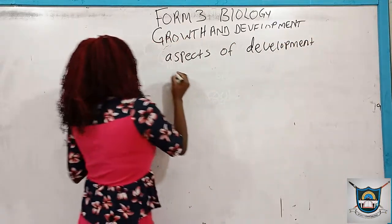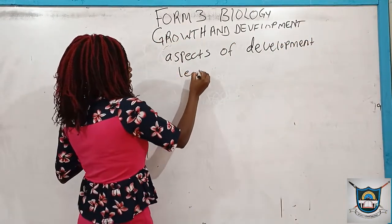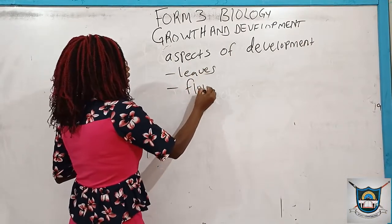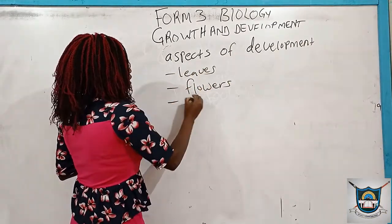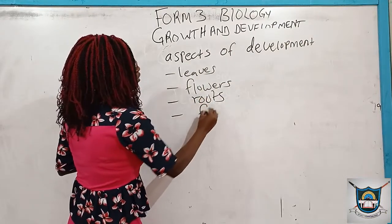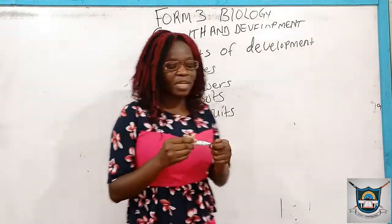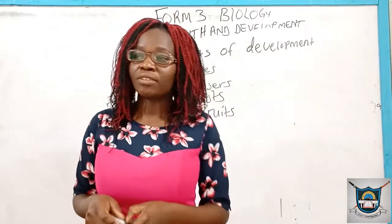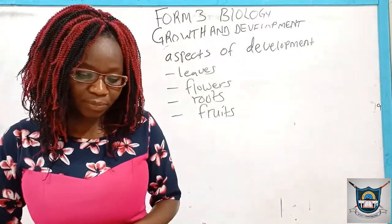We can look at the formation of leaves, formation of flowers, and formation of roots. So if we have such aspects in a plant, we can see that our plant is still developing.